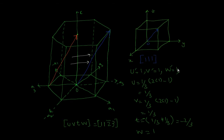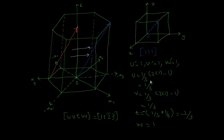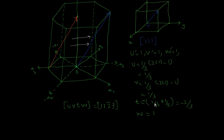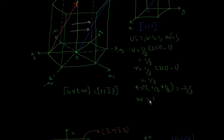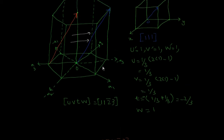So u' = 1, v' = 1, and w' = 1. Then u = (1/3)(2×1 - 1) = 1/3, v = (1/3)(2×1 - 1) = 1/3, t = -(u + v) = -2/3, and w = w' = 1. Removing the fraction by multiplying all by 3, the four indices u v t w are equal to 1 1 2̄ 3.